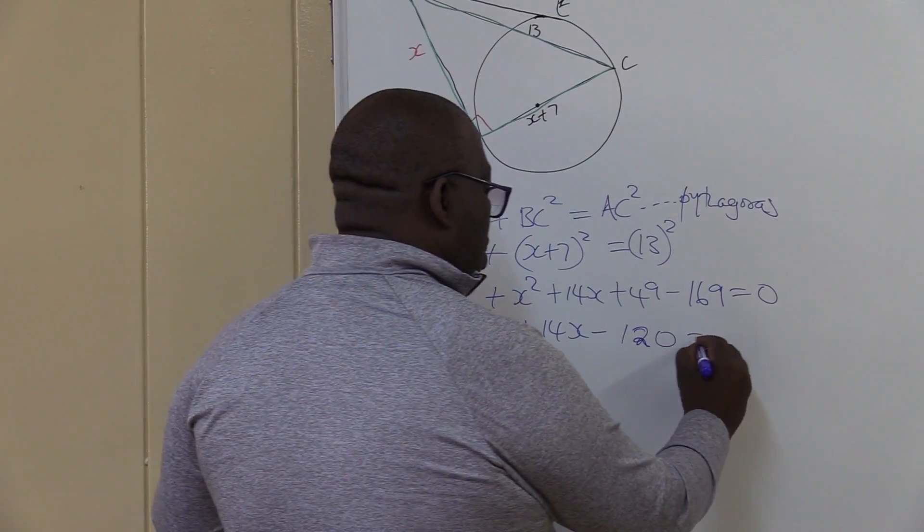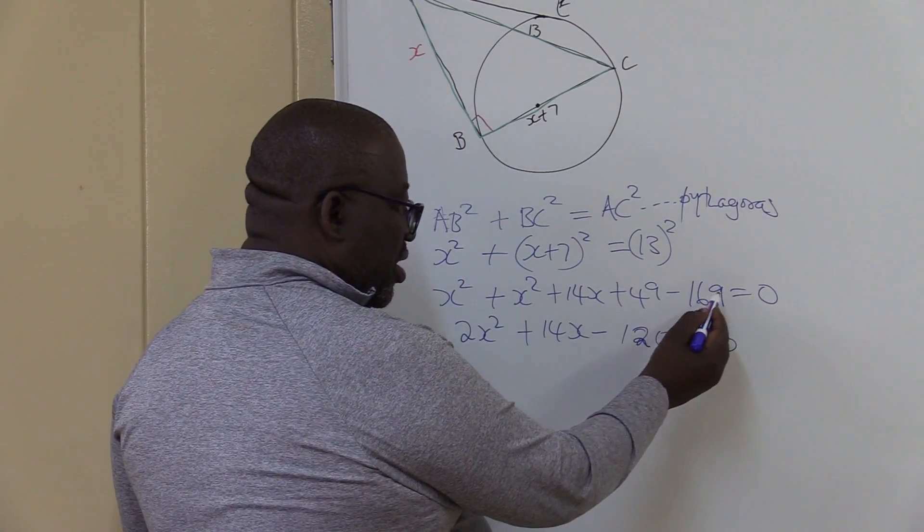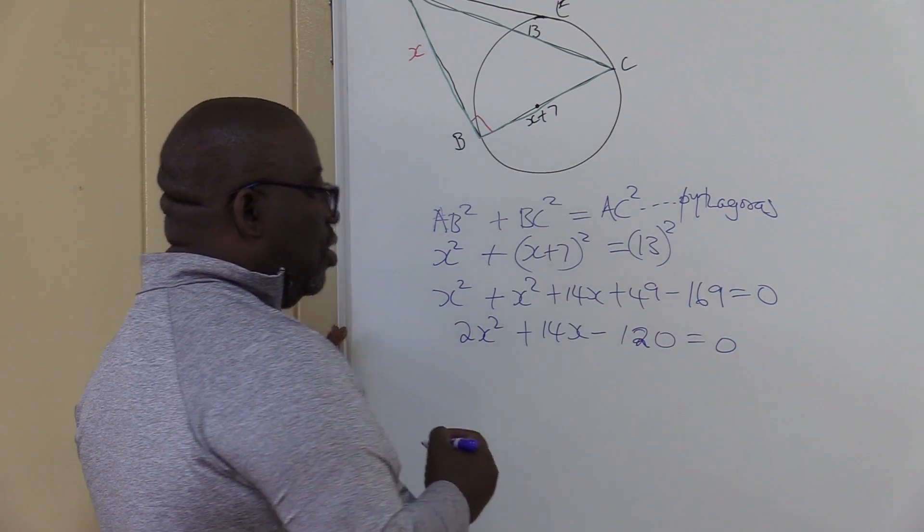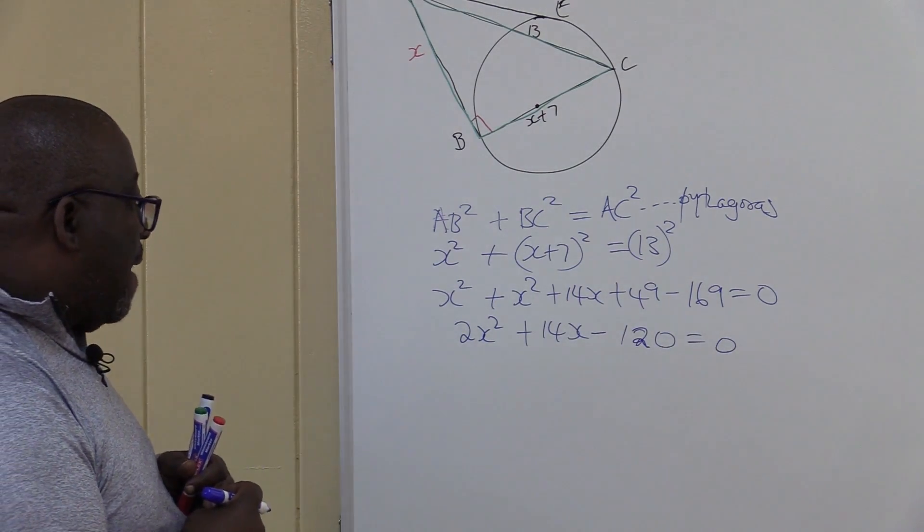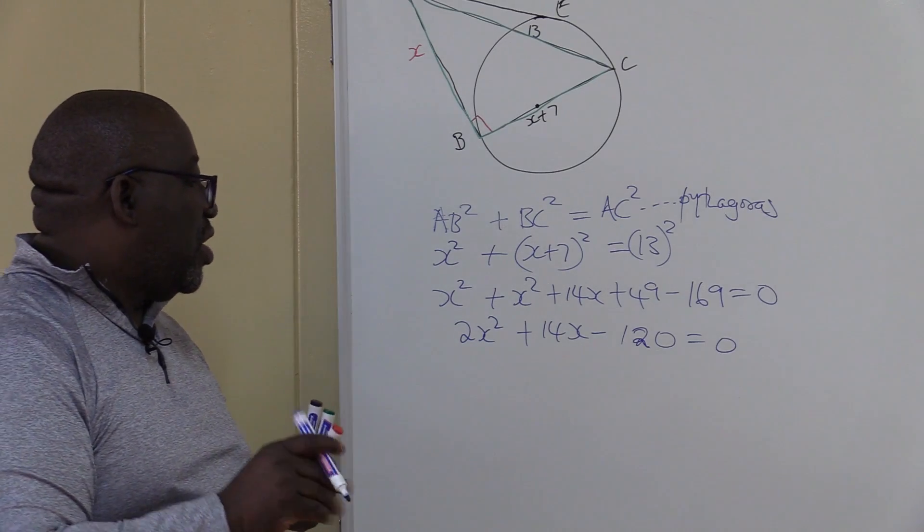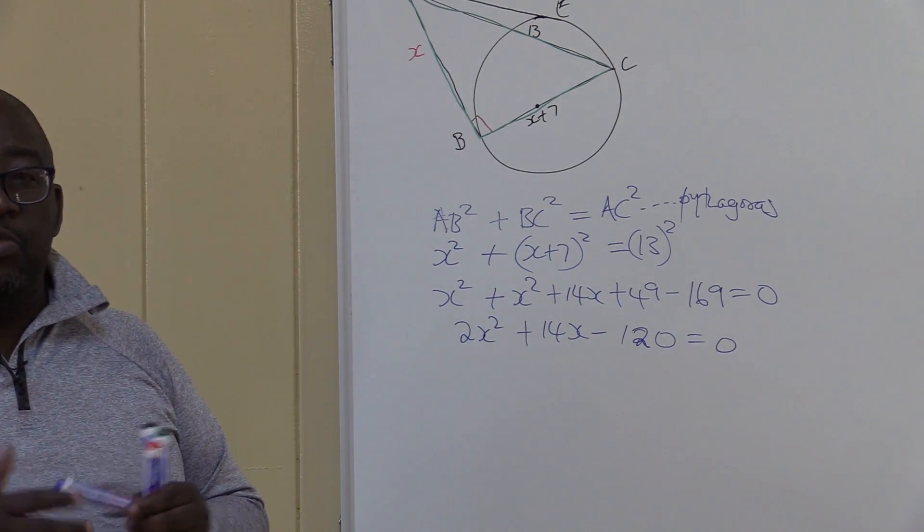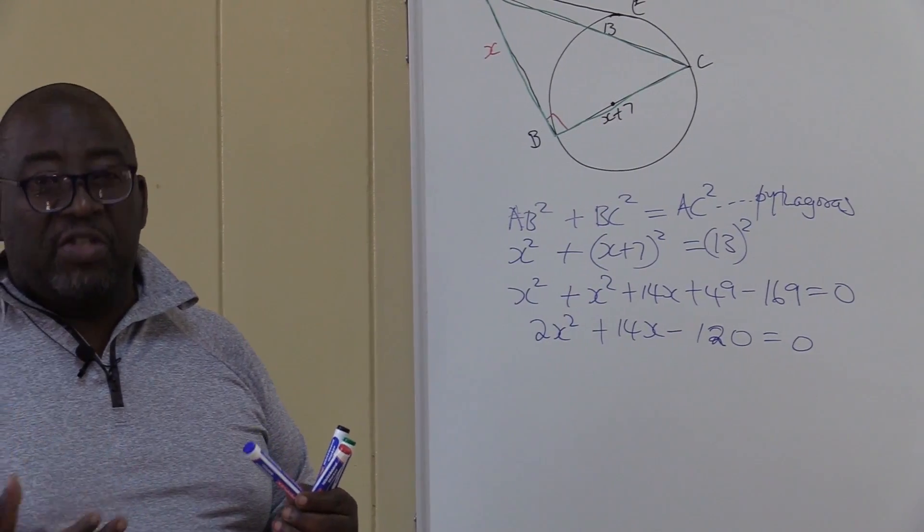This is equals to 0. I have to define 129 minus 9 is 0. 6 minus 4 is 2. Then we're left with that 1. So it's minus 120. This is what we have. We've got 2X squared plus 14X minus 120. What do we do now?